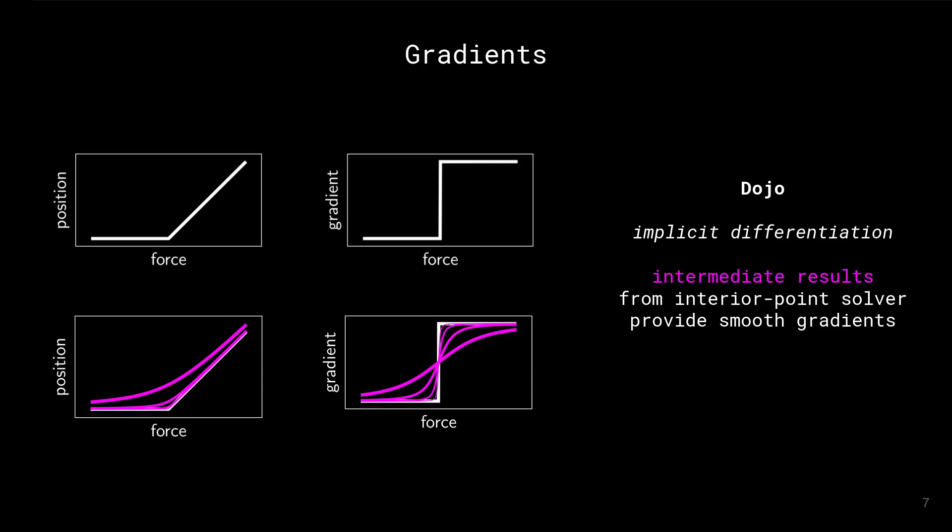DOJO can generate any desired level of gradient smoothness dynamics by choosing a single relaxation parameter.